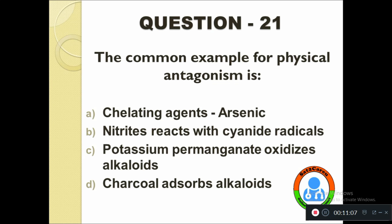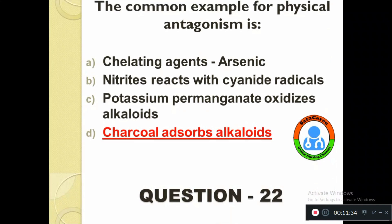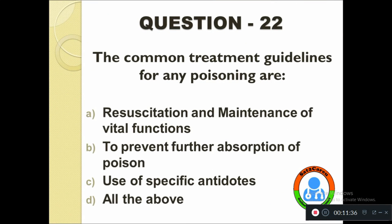Question number twenty-one: The common example for physical antagonism is — option A: Chelating agents for Arsenic, B: Nitrates react with cyanide radicals, C: Potassium permanganate oxidizes alkaloids, D: Charcoal adsorbs alkaloids. The correct answer is charcoal adsorbs alkaloids.